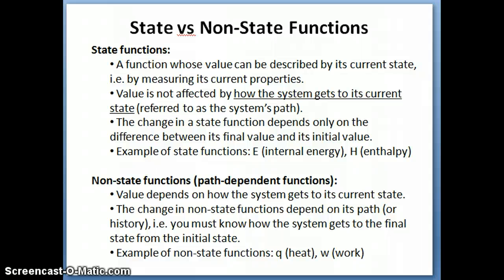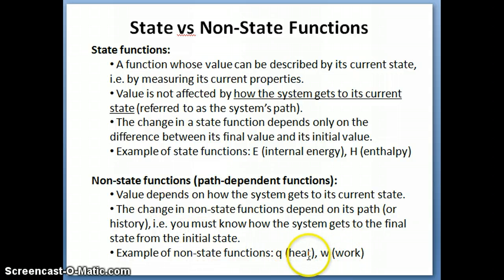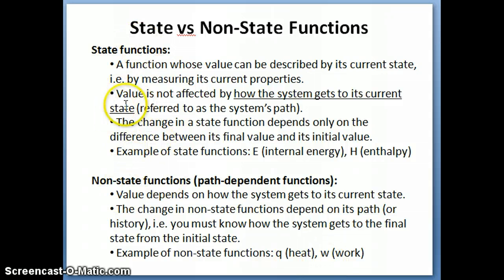What are some examples of state functions? The one you already know is internal energy. You don't need to know the path of the system to get from the beginning to the end — you just need to know the initial value and the final value. Take the difference and you get delta E, the change in internal energy. Later, we'll encounter the enthalpy, which is also a state function. However, non-state functions are work and heat — their values depend on the path, even if you get from the same initial state to the same final state.